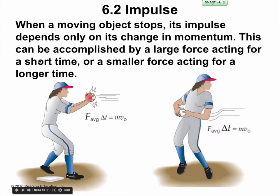When a moving object stops, its impulse depends only on the change of momentum. This can be accomplished by a large force acting in a short time or a small force acting over a longer time. If you catch a fast softball with bare hands, it will hurt because that ball has momentum you have to change. Your hands stop the ball, and the heat you feel is a transfer of energy.